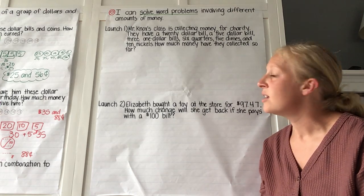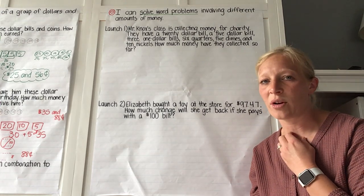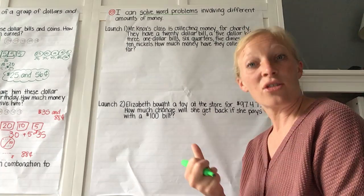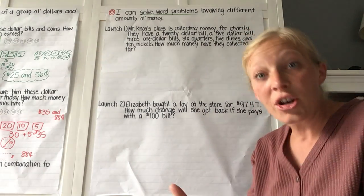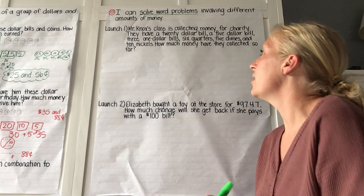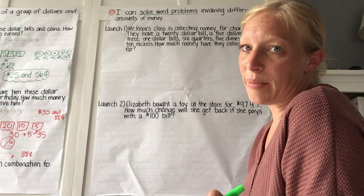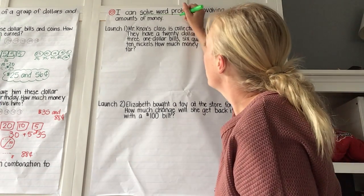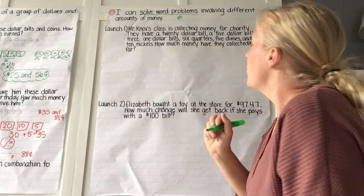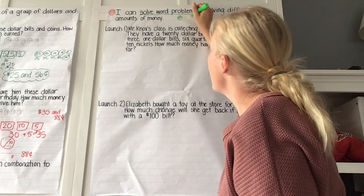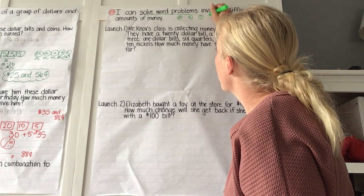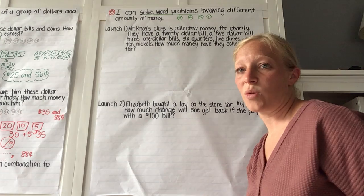Let's refresh our minds so that we know what we're being asked to do. We've got our dollar bills: our $20, our $100, our $50, our $10, our $5, our $1. What about our coins? A quarter is worth 25 cents, a dime is worth 10 cents, a nickel is worth 5 cents, and a penny is worth 1 cent.